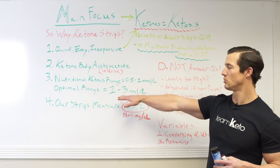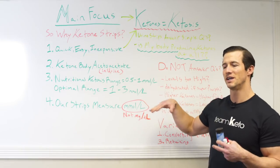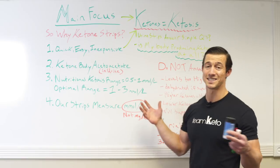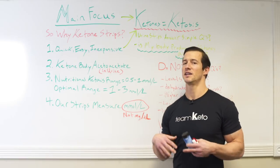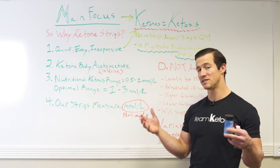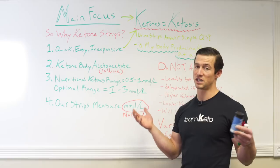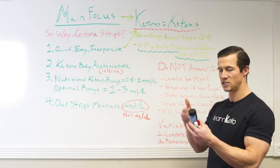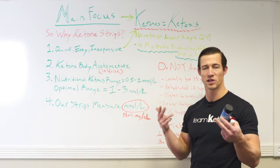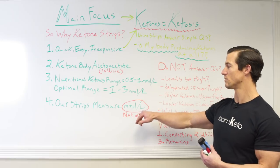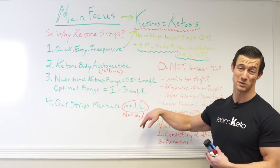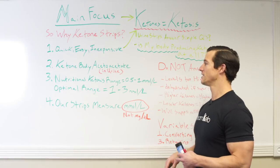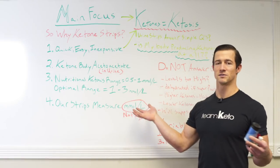Numbers three and four: basically the nutritional ketosis range and optimal ketosis range — but keep in mind these exact measurements are hard to get with ketone strips. That's why we focus on just the question: is my body producing ketones at all? The millimole per liter measurement is a little more in depth; that's usually what we do with the blood test measuring the BHB ketone body. These strips are nice and we recommend them, because you don't have to convert from milligrams per deciliter to millimoles per liter.